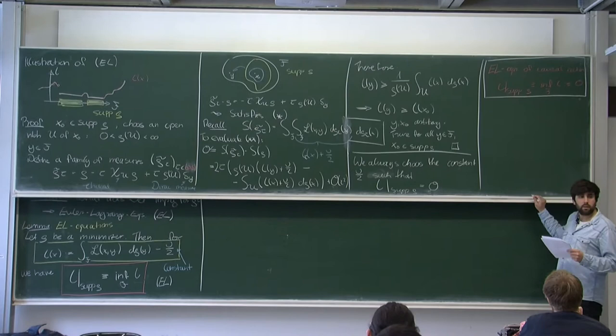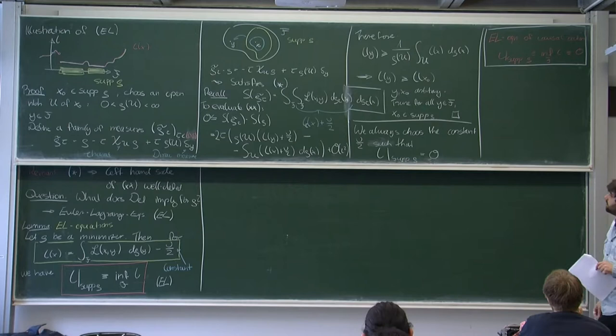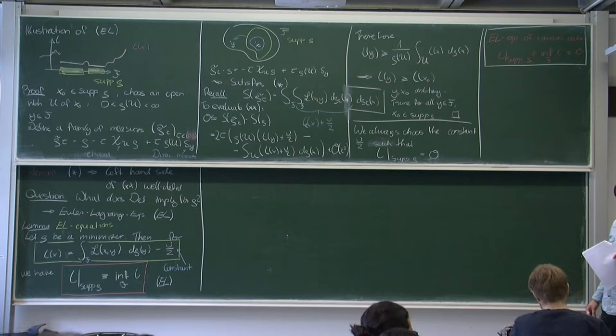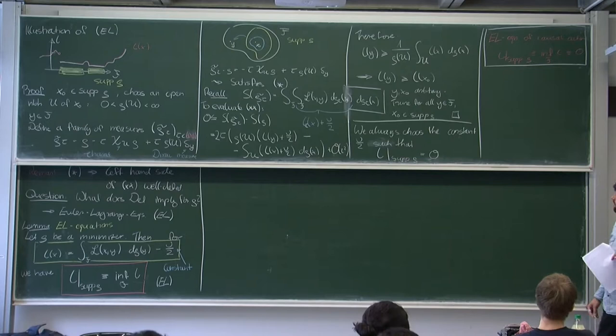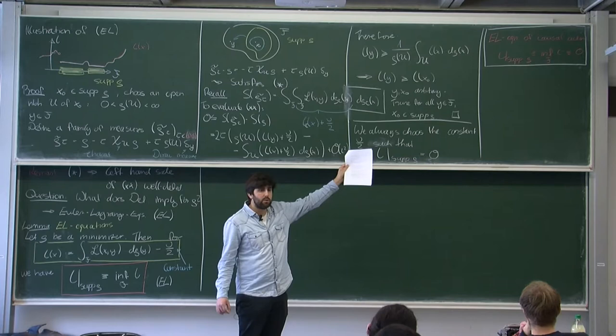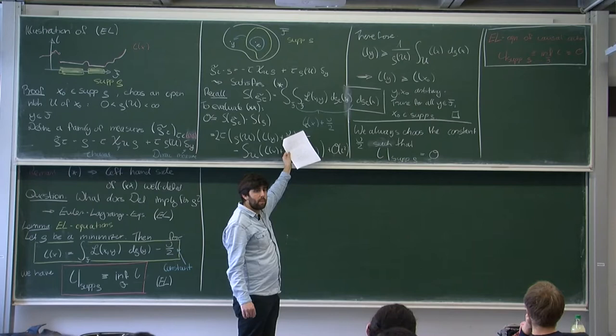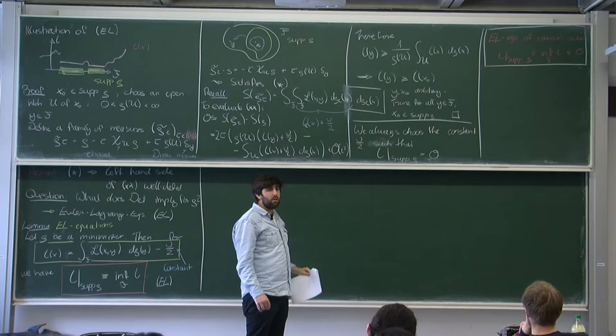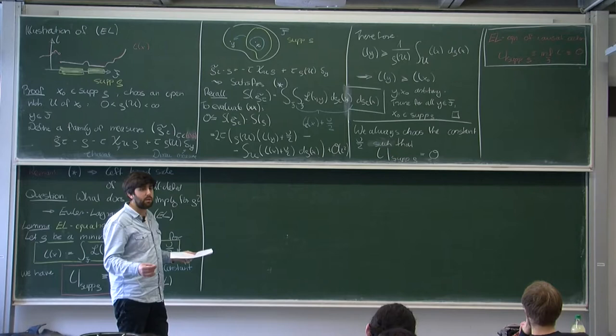Questions? The action is a multiple of the measure only if the measure is a minimizer. Only then ℓ is zero by our choice of constant, and only then the action equals the constant times the volume. But when looking for minimizers we also consider measures which are not minimizers, and for those this does not hold.